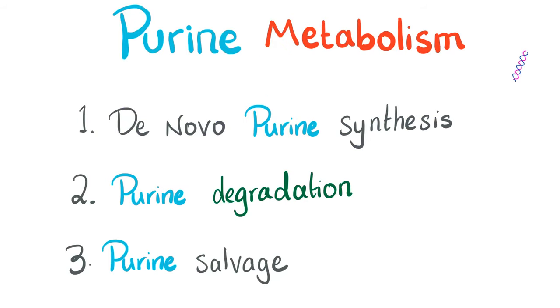Purine metabolism has three different processes: number one, de novo purine synthesis — let's make it; number two, purine degradation — let's break it; and number three, purine salvage — let's redeem it, let's recycle it.